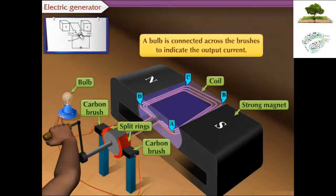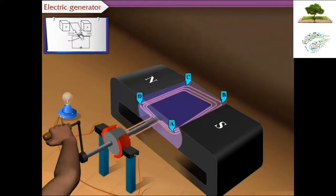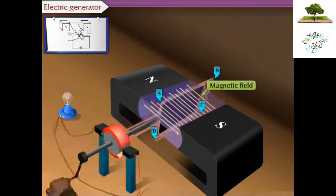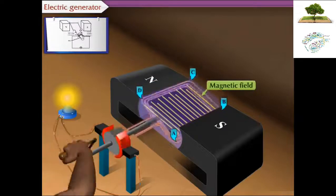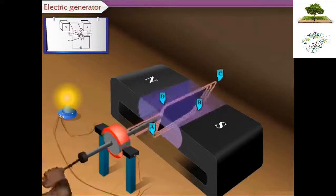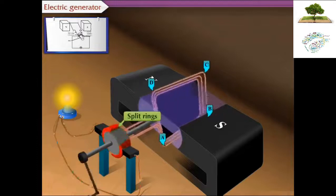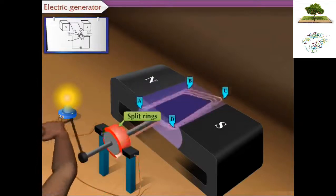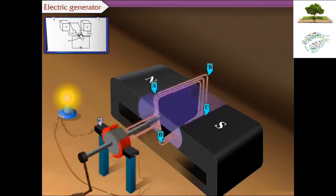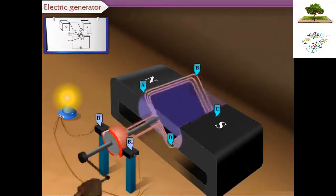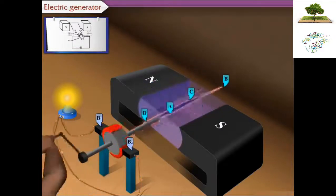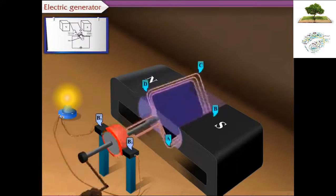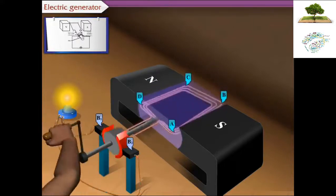A bulb is connected across the brushes to indicate the output current. When the coil rotates in the magnetic field, a current is induced in the coil. As the coil rotates, the split rings attached to the end of the coil also rotate. The brushes B1 and B2 make electric contact with the split ring. Let the coil rotate in clockwise direction such that branch AB is moving downwards while the branch CD moves upwards.